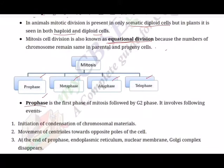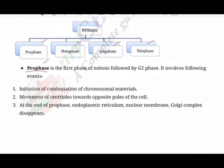Prophase is the first phase of mitosis followed by G2 phase and it involves the following events: initiation of condensation of chromosomal materials, movement of centrioles towards opposite poles of the cells. At the end of the prophase, endoplasmic reticulum, nuclear membrane, and Golgi complex disappear. Prophase is the first stage of mitosis which follows the S phase and G2 phases of interphase.